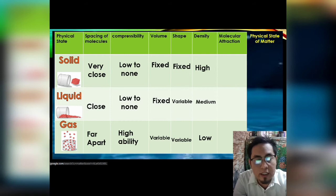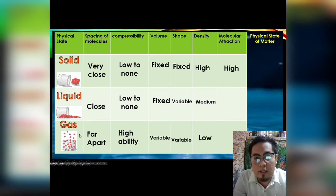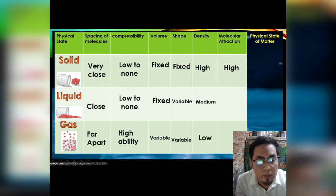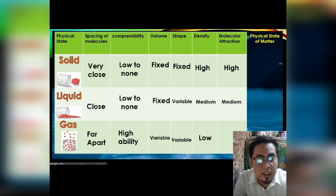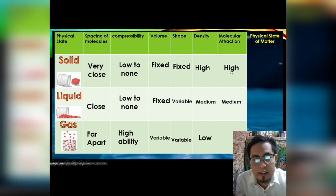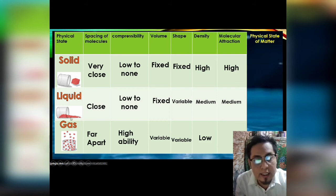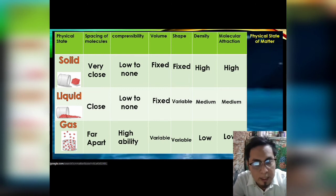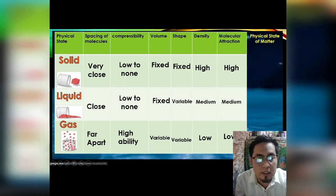Now let us look at molecular attraction — this is the reason why solid, liquid, and gas look different from each other. The molecular attraction of solid is very high because the particles have a strong attractive force, which is why they are very close to each other. Liquid has a medium molecular attraction — there is attraction, but not as high as solid, so there are spaces between particles. Gas has very low molecular attraction.